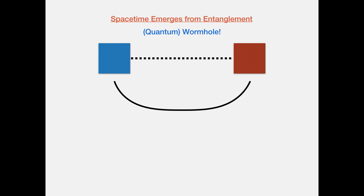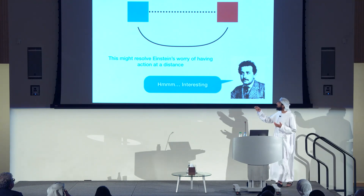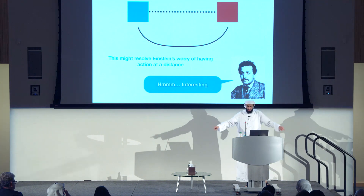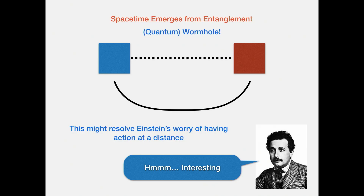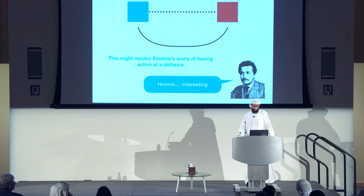This is cutting edge — all the i's have not been dotted. But if this is true, I think it actually addresses Einstein's worry. He was worried that entanglement was weird because it looked like action at a distance — but it's not really at a distance anymore. Even though these coins might be far away in the ambient space, they're connected by a very short wormhole. So he might say 'interesting' — or whatever 'interesting' is in German.